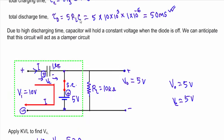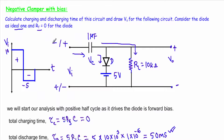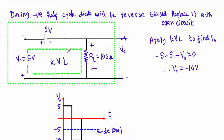During the negative half cycle, this terminal will be negative and this terminal will be positive, so this diode will be replaced by an open circuit. As the diode gets opened, I can remove this branch from the circuit. Once the diode branch has been eliminated, our circuit will look like the remaining circuit. We are left with our output voltage VO taken across the load resistor RL equal to 10 kilo ohm, with its positive terminal here and negative terminal here.